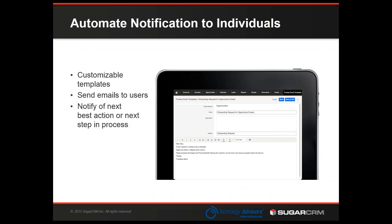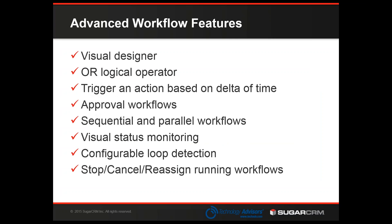Just like the existing workflow tool within Sugar, you can use Advanced Workflow to automate notifications with customizable templates, where you can send emails to users or to contacts and leads as recipients — to notify them that something has happened or what the next step in the process might be. One of the key differentiators between the old workflow system and Advanced Workflow is that Advanced Workflow can do a lot more complex logic. You can have OR conditions, branching gateways, business rules with different results based on a condition, and multiple steps with different conditions being checked along the way. This makes it a lot more realistic of what your actual business processes look like.